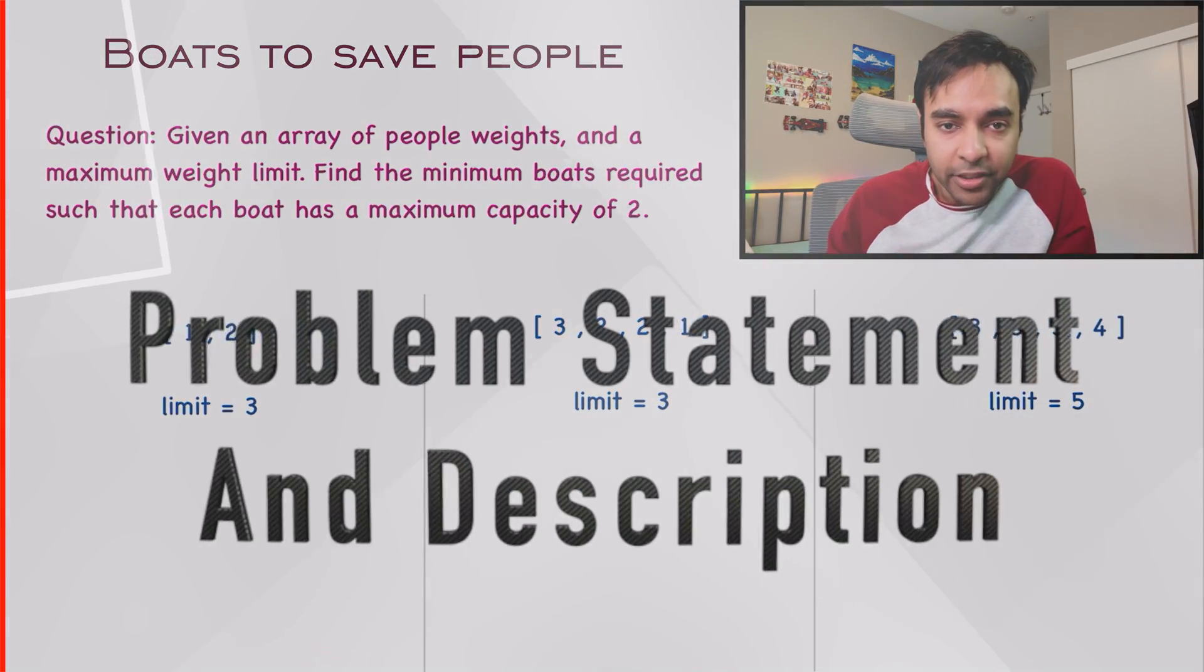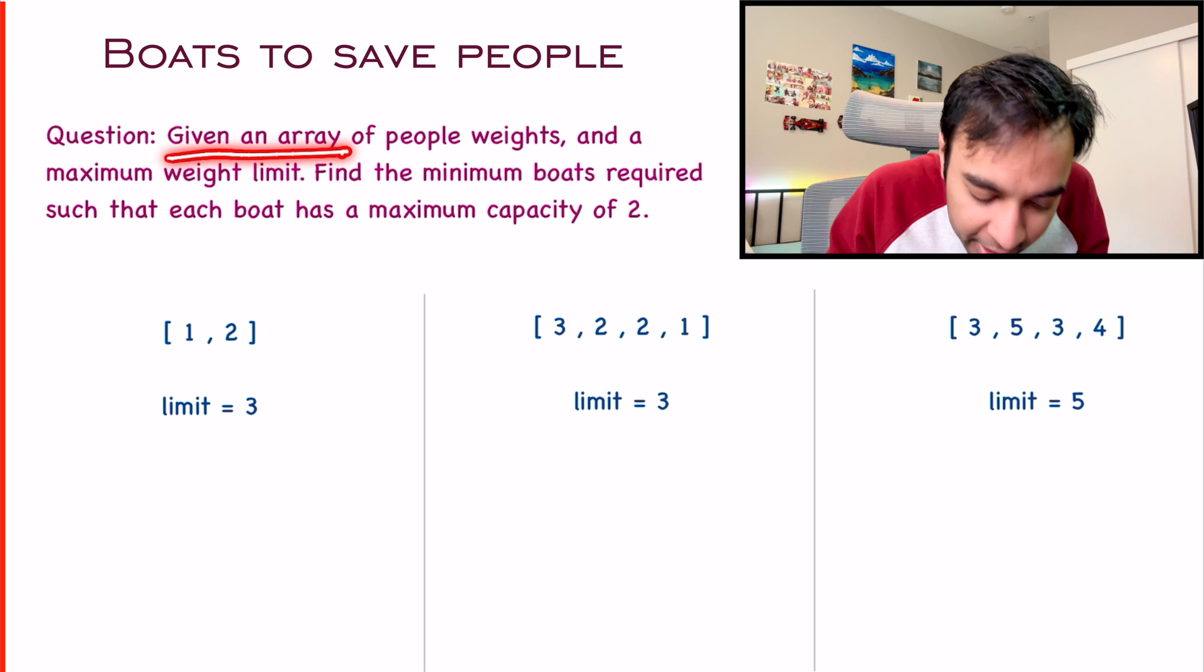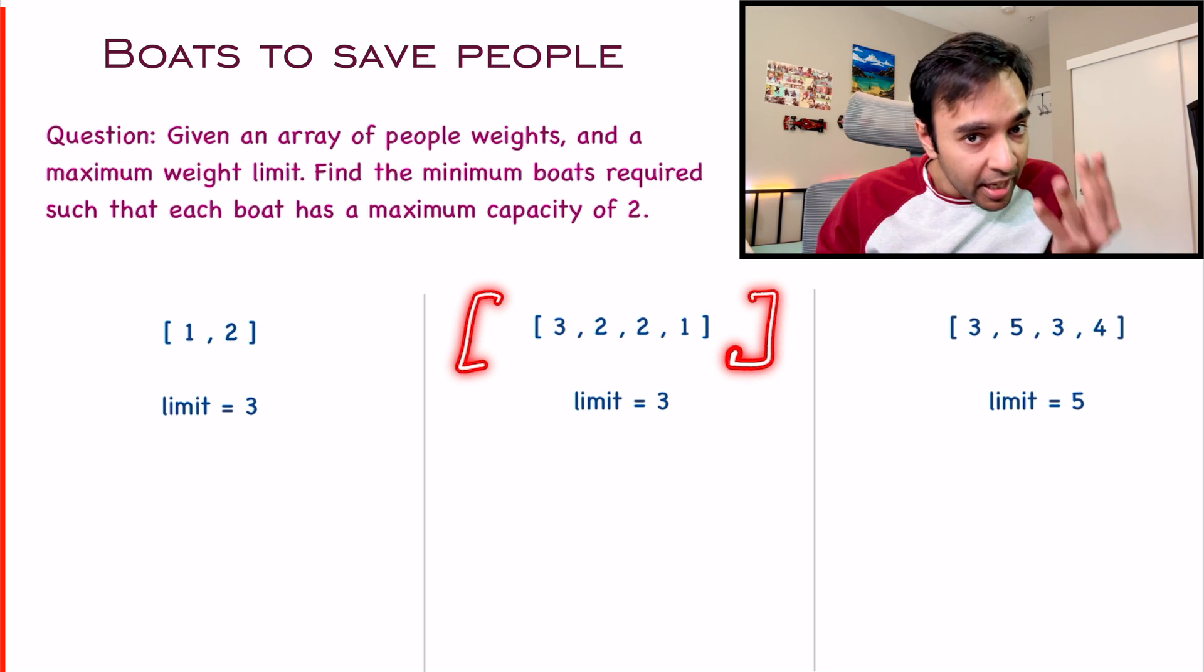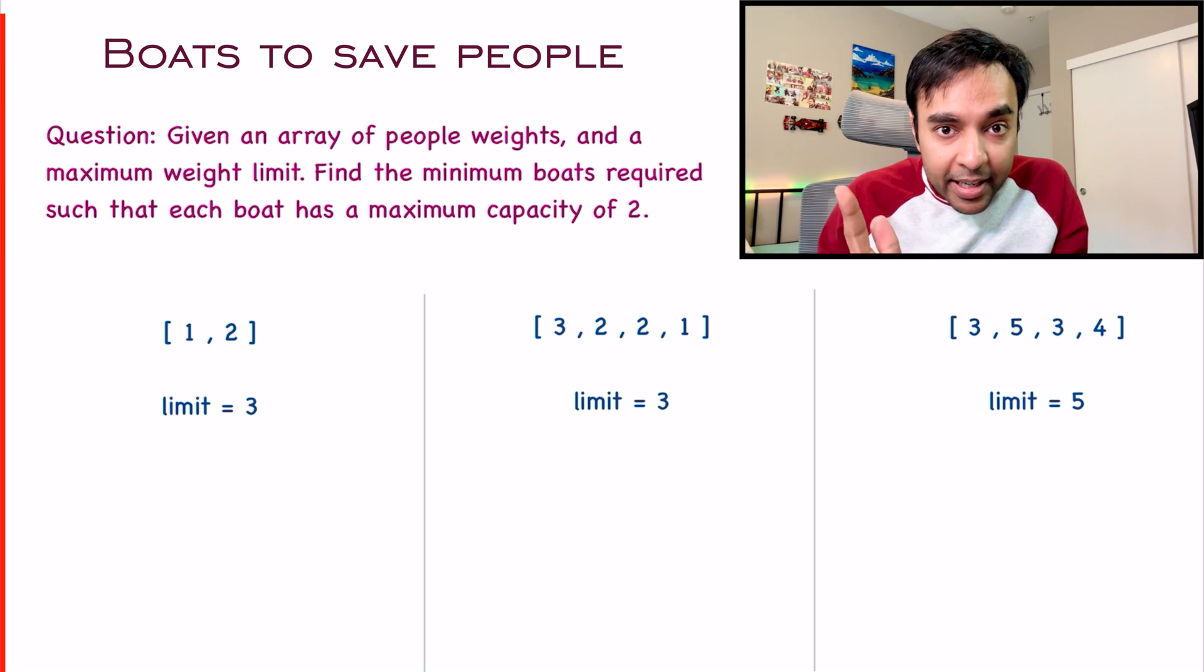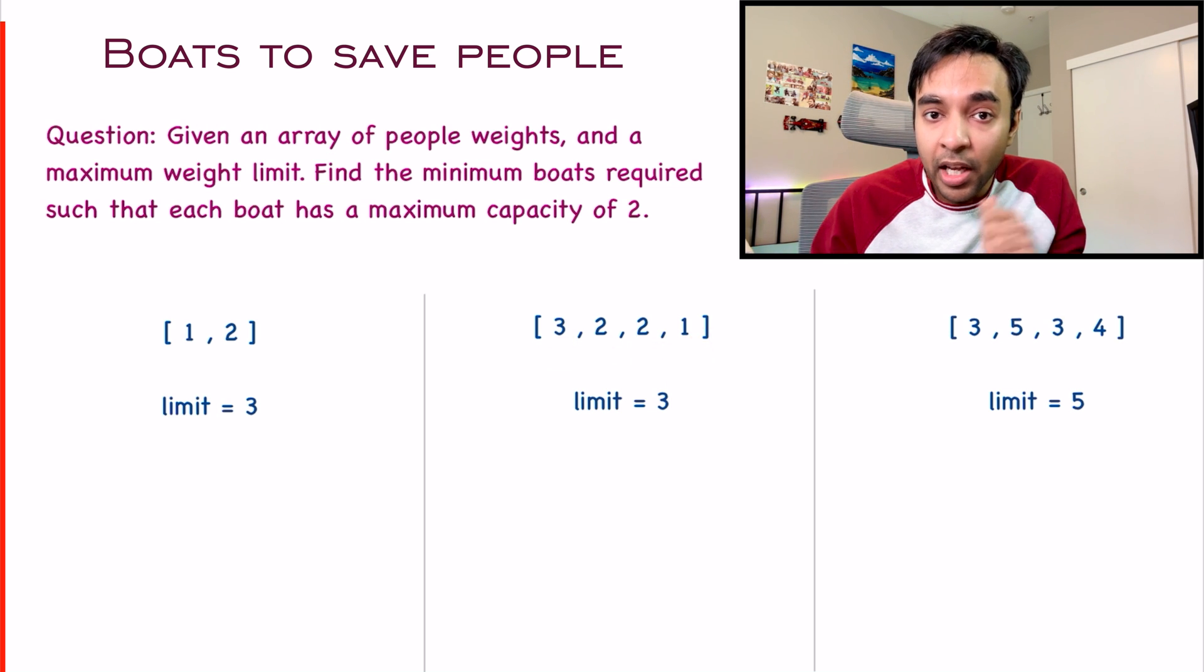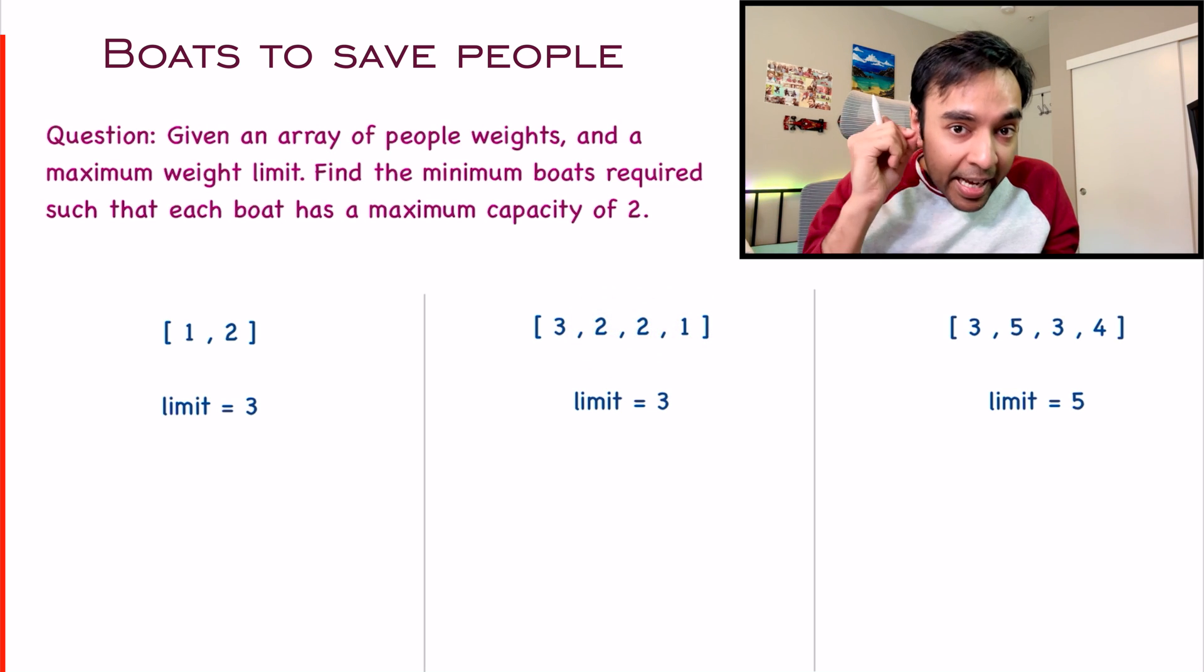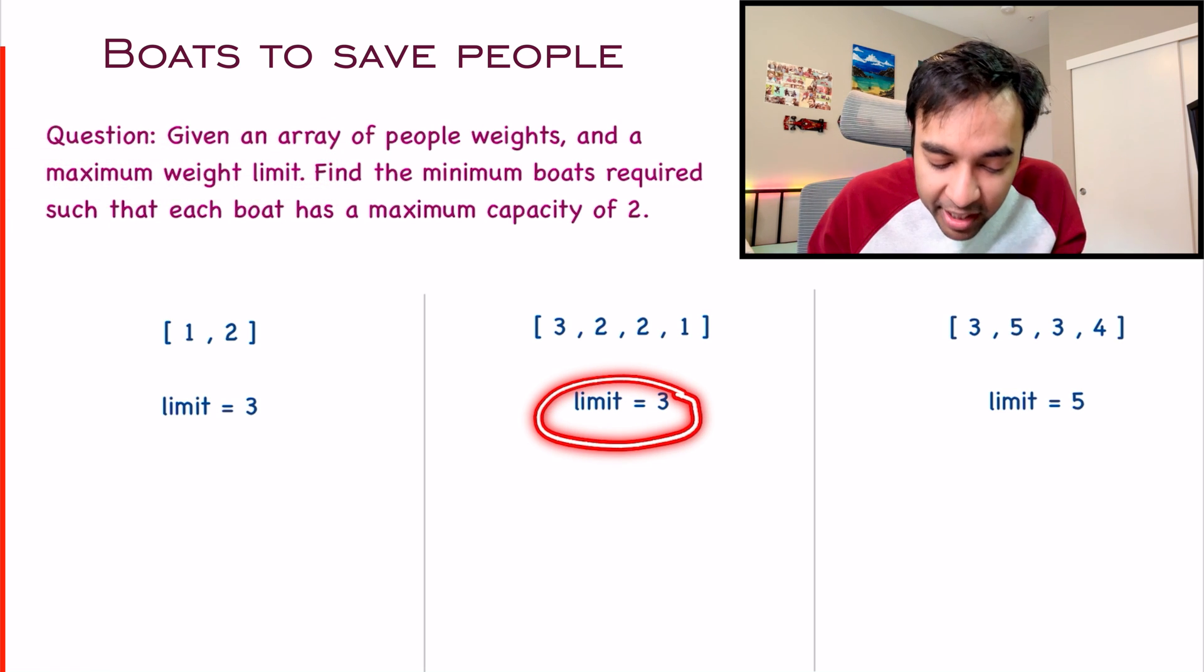First of all, let us make sure that we are understanding the problem statement correctly. In this problem, you are given an integer array that has the weight of certain people. For example, if you have this particular test case, it has four elements and each of this element is signifying an individual, and each element is telling the weight of that particular person. You can assume the weight of the first person is 3 kg, then 2 kg, then 2 kg, and then 1 kg.